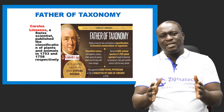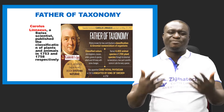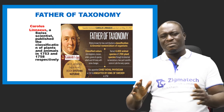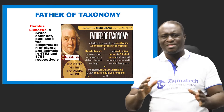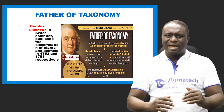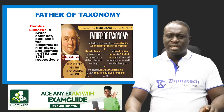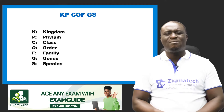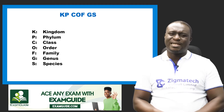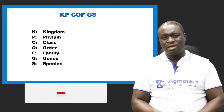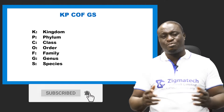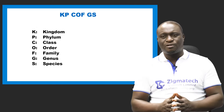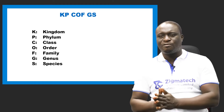He simplified the way of easy identification of living things. The first thing he did was to classify living things into seven major groups, which we can remember by the acronym KP COF GS: Kingdom, Phylum, Class, Order, Family, Genus, and Species.